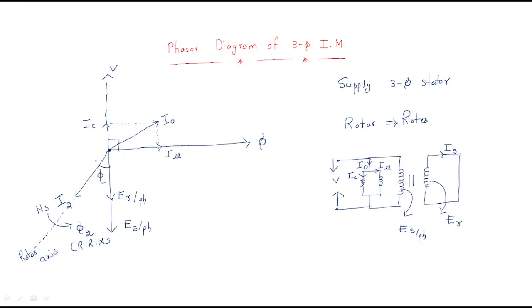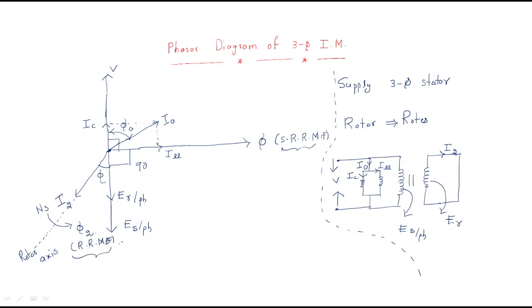The angle between voltage and current is the no-load power factor angle. This flux is the stator RMF, because the flux is produced by the stator flux only. Now, the load angle is the angle between the stator RMF and the rotor RMF. We can write the load angle value directly: the load angle equals 90 plus phi.